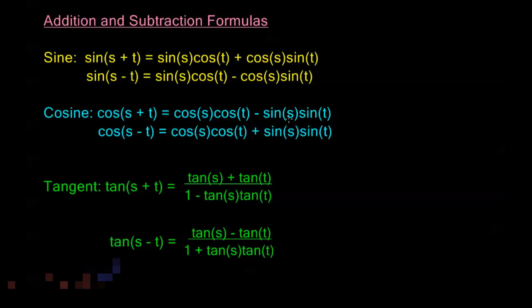Different people remember these formulas in different ways. You should become very comfortable with them if you're in a pre-calculus course, as typically on a test you won't have anything to refer to. For both sine formulas, notice we have a mix: sine s cosine t, then cosine s sine t, keeping the variables in order. If we're adding inside the argument, we're adding on the right; if we're subtracting inside, we're subtracting on the right.